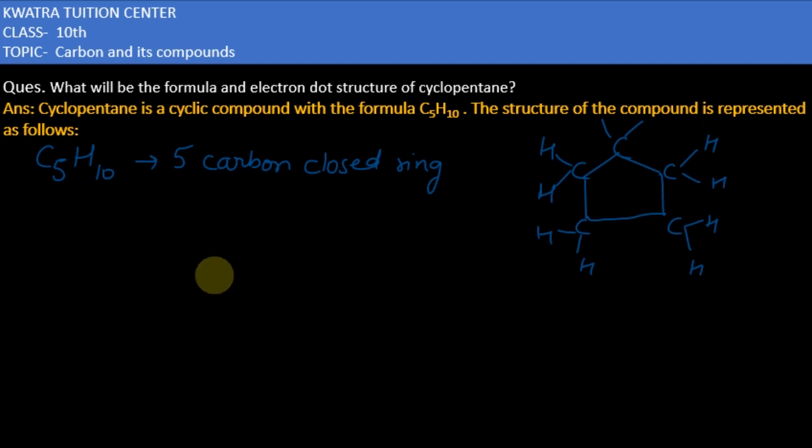Now come to the electron dot structure. Let us first arrange the carbons in this cyclic form. The outermost electrons in carbon is four.